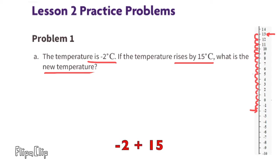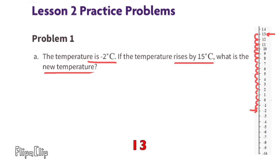That is the same as negative 2 plus 15. You can rearrange the order and rewrite this as 15 minus 2, which equals 13. The new temperature would be 13 degrees Celsius.